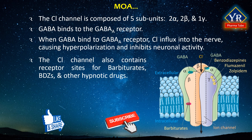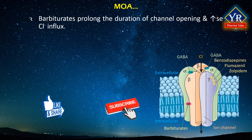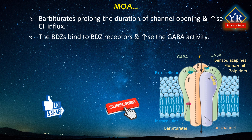The chloride channel also contains additional receptor sites for barbiturates, benzodiazepines, and other hypnotic drugs. These hypnotic drugs increase GABA-A receptor-mediated chloride influx by binding to specific drug receptor sites on the chloride channel. Barbiturates prolong the duration of channel opening and increase chloride ion influx. Barbiturates are also believed to have additional inhibitory actions, both related and unrelated to the chloride channel. Benzodiazepines bind to their receptors — named the benzodiazepine receptors — and increase the activity of GABA by increasing the frequency of chloride channel opening.